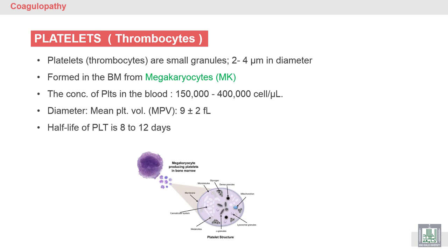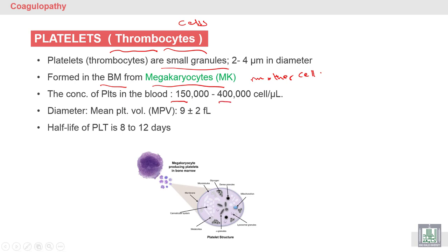Another name for platelets is thrombocyte — 'thrombo' means clot, and '-cyte' means cell, so thrombocytes are cells capable of forming a clot. Platelets or thrombocytes are very small and arise from a very large cell in the bone marrow called the megakaryocyte, which is the mother cell for the platelet. The normal concentration of platelets is 150,000 to 400,000 cells per microliter. The half-life of platelets is up to 12 days, and the mean platelet volume is about 9 ± 2 femtoliters. Platelets are fragments coming from the mother cell.